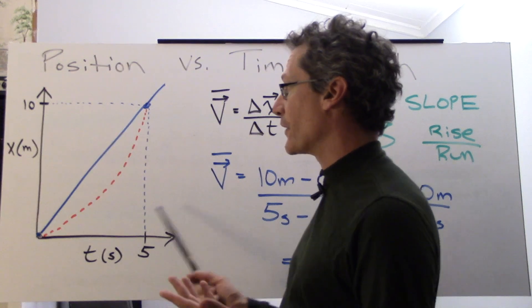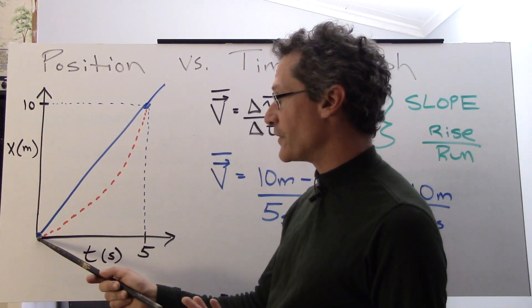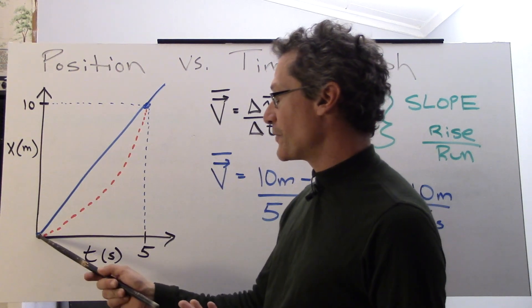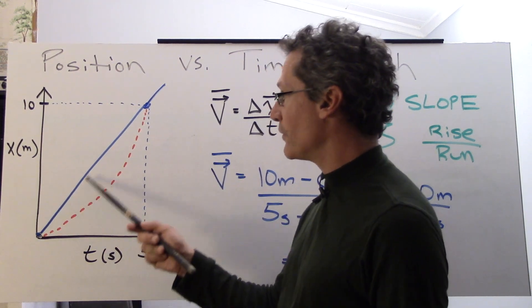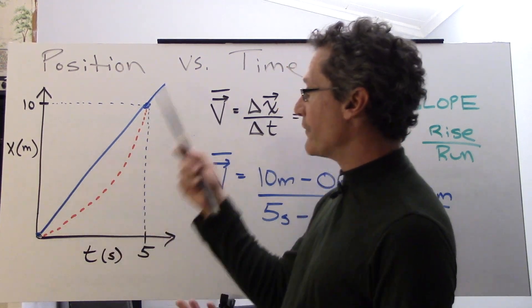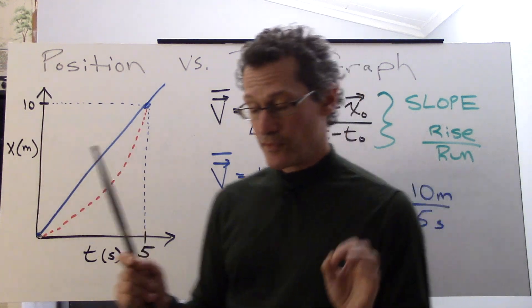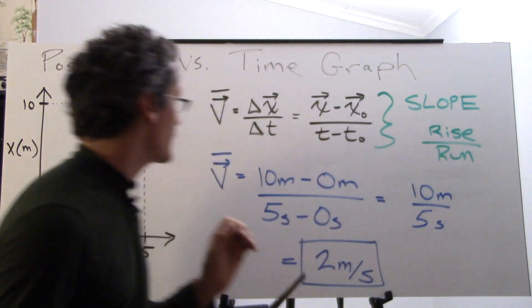So what we have here is a position 10 meters. We start off at the origin over here and something in time is moving forwards up to this location over here. In blue we have this straight line and in this dotted red line it's a curve. Let me just hold off on describing what that means in a moment.